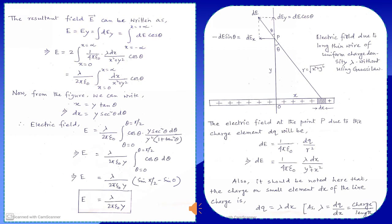The electric field dE has two components: in the x-axis it has component -dE sinθ, and in the y-axis it has component +dE cosθ. The negative sign in the x-component indicates that it is in the negative x direction. Every charge element on the right has a corresponding charge element on the left, so the x-components of two such charge elements are equal and opposite and cancel out. The resultant field E gets contributions only from the y-components.